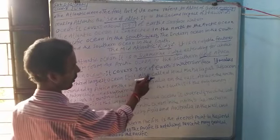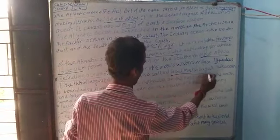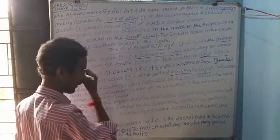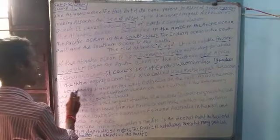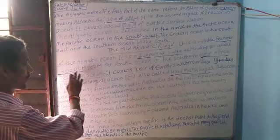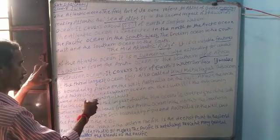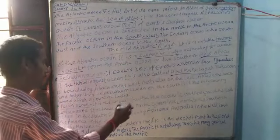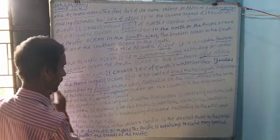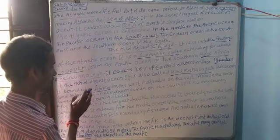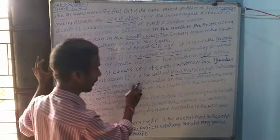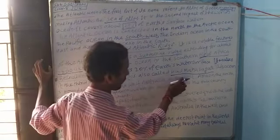The Indian Ocean is also called Hind Mahasagar. It is bounded by Africa. It is connected to surrounding continents — Africa on the west and Australia on the east.